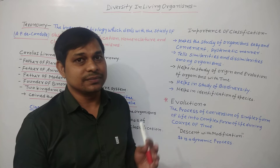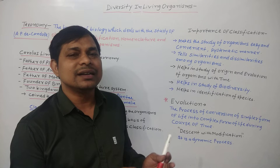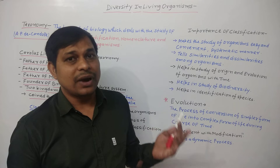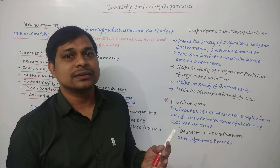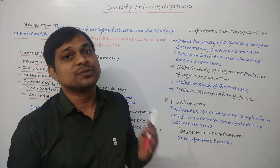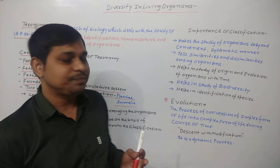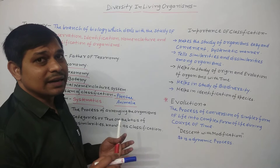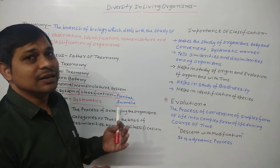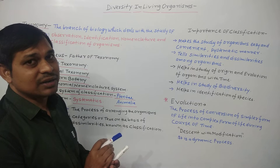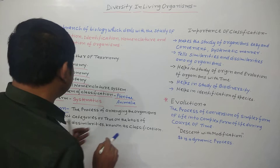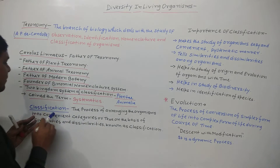Different categories in classification include: Kingdom, Phylum or Division, Class, Order, Family, Genus, and Species. All these are the taxonomic categories. We assign a particular category to each and every living organism on the basis of similarities and dissimilarities — that is the process of classification.